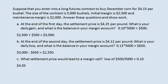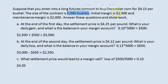We can check that by doing the operations in reverse. If the price fell to $4.05, you would lose $0.10 per bushel. 5,000 bushels gives a loss of $500. Your initial amount of $2,500 would therefore drop to $2,000, and that is the point at which there is a margin call.